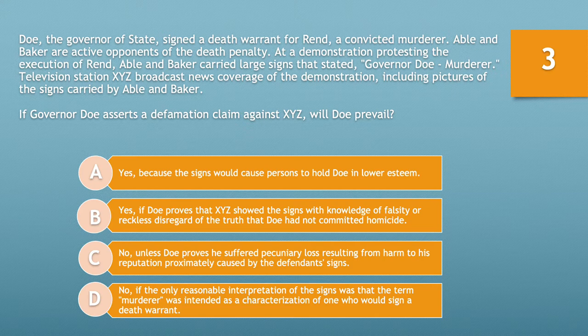Question number three. Doe, the governor of state, signed a death warrant for Rend, a convicted murderer. Abel and Baker are active opponents of the death penalty. At a demonstration protesting the execution of Rend, Abel and Baker carried large signs that stated 'Governor Doe, murderer.' Television station XYZ broadcast news coverage of the demonstration, including pictures of the signs carried by Abel and Baker. If Governor Doe asserts a defamation claim against XYZ, will Doe prevail?